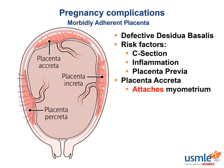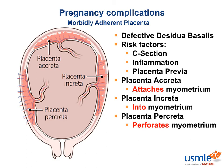Each type refers to a progressively deeper extent of attachment into the myometrium. Accreta attaches to the myometrium and is the most common. Increta invades into the myometrium. And the third — percreta — perforates through the myometrium. A helpful way to remember percreta is to think of it as the placenta that likes to creep around into other tissues it's not supposed to be in.